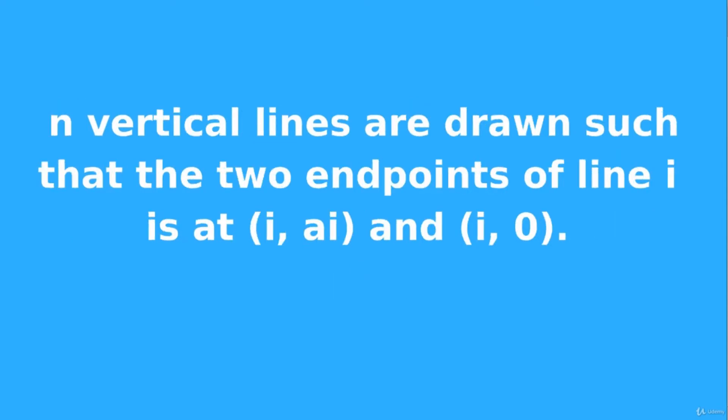Each input value represents the y-axis of a point, and we have n points. Imagine there is a building that goes down from that point to the floor — the ceiling is at our point and the bottom of the building is at the same x-axis position. Since it's on the floor, the y-axis at the bottom is always zero.